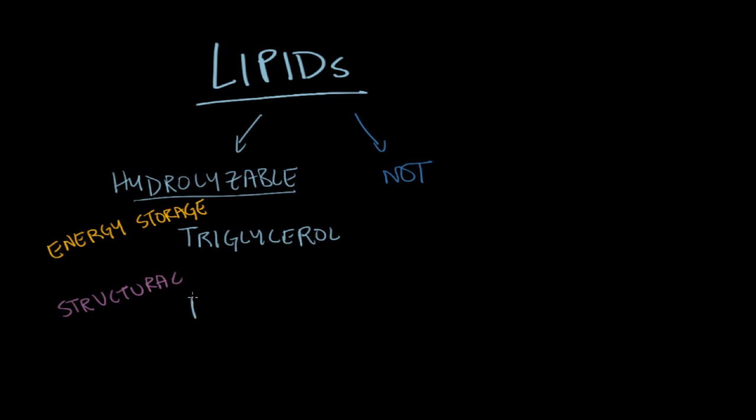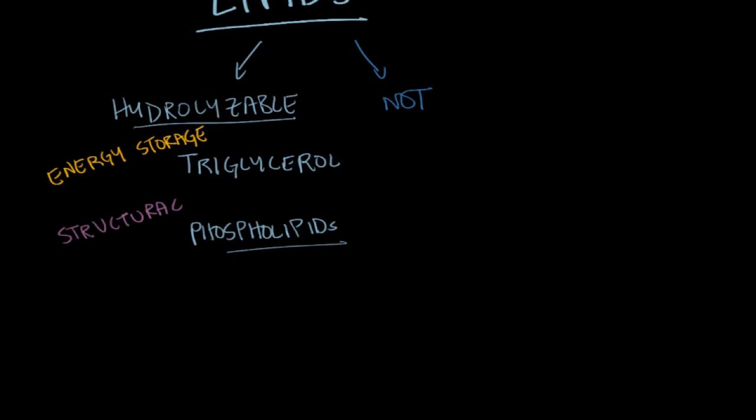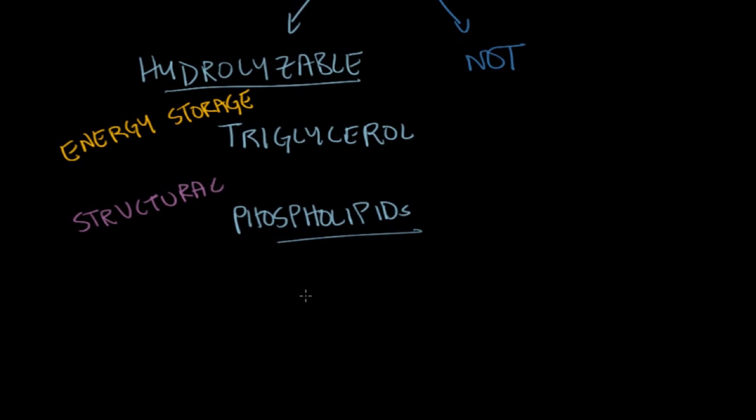So the first one I want to talk about are phospholipids. Phospholipids are hydrolyzable lipids that contain a phosphorus atom. This phosphorus atom usually comes in the form of a phosphodiester bond. So we start with phosphoric acid, which is H3PO4.